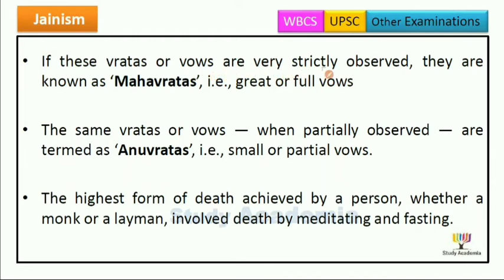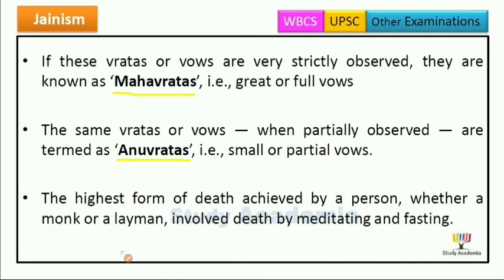If these vratas or vows are strictly observed, then they are known as Mahavrata — that is, great or full vows. The same vratas which are partially observed are termed as Anuvratas — small or partial vows. The highest form of death in Jainism is achieved by a monk or layman through meditating and fasting — Jainism ke log fasting karke aur meditate karke apna dehant karte hain, jo highest form of death mana jata hai.